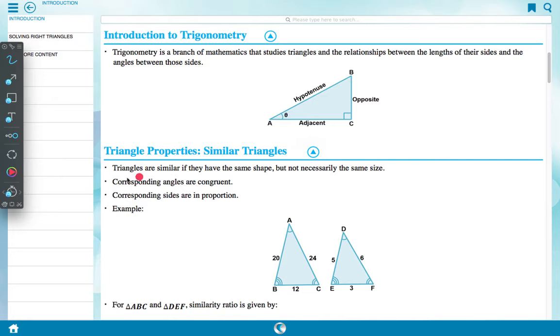Triangle properties: Similar triangles. Triangles are similar if they have the same shape but not necessarily the same size. Corresponding angles are congruent. Corresponding sides are in proportion.